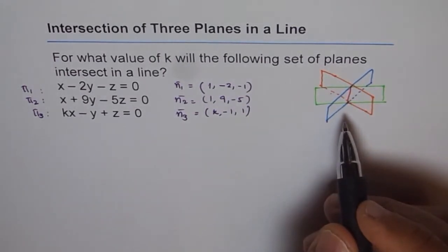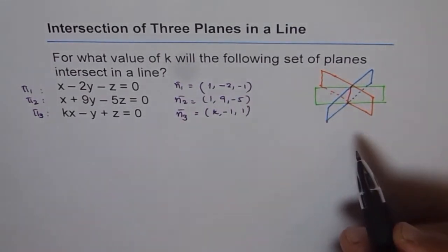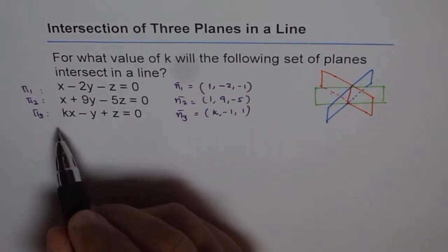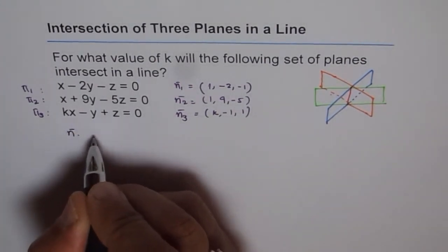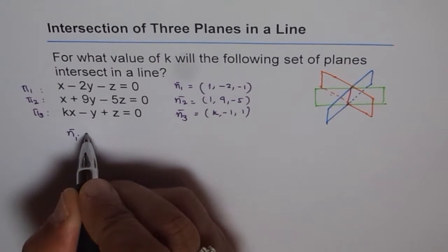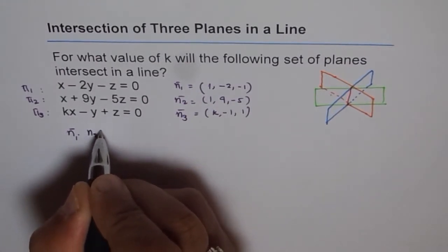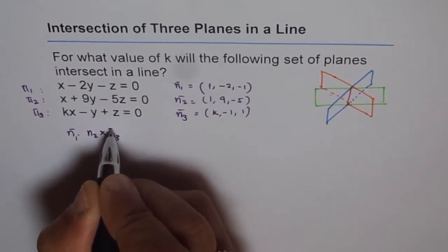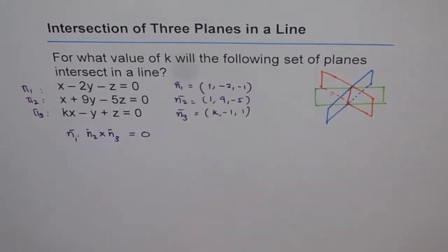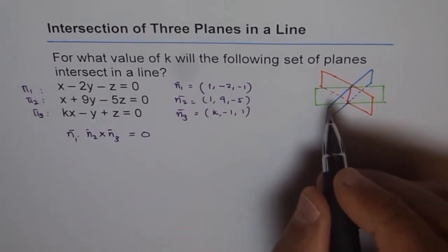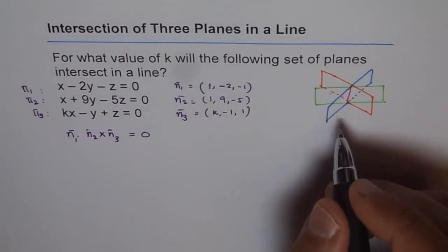For this condition to happen, this scalar triple product should be 0. And that is what we will take advantage of to figure out the value of k, which will make this possible. So what we are trying to find is n1 dot n2 cross n3, and this is called scalar triple product. That should be 0.